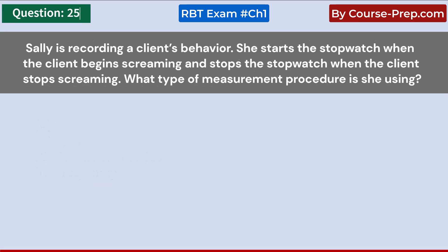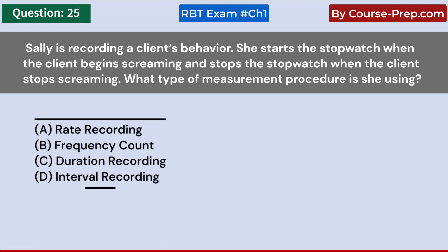Sally is recording a client's behavior. She starts the stopwatch when the client begins screaming and stops the stopwatch when the client stops screaming. What type of measurement procedure is she using? A. Rate recording. B. Frequency count. C. Duration recording. D. Interval recording. Answer C: Duration recording.